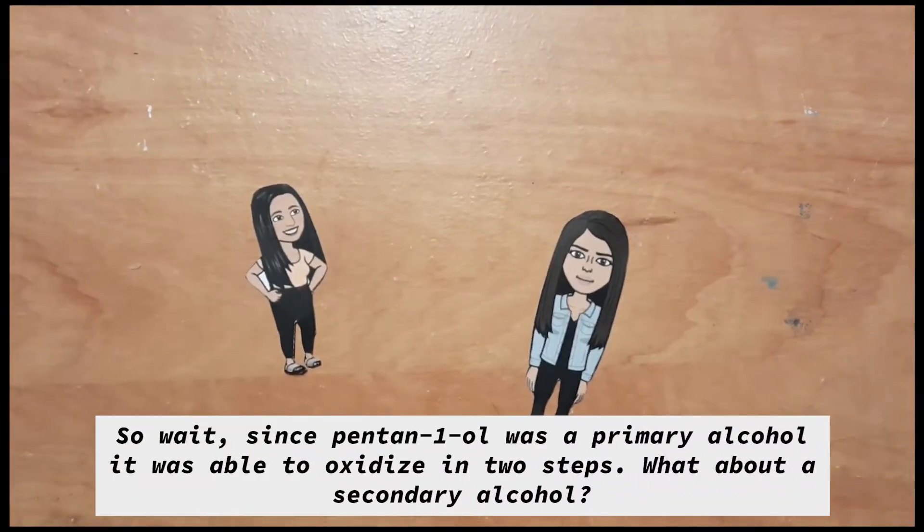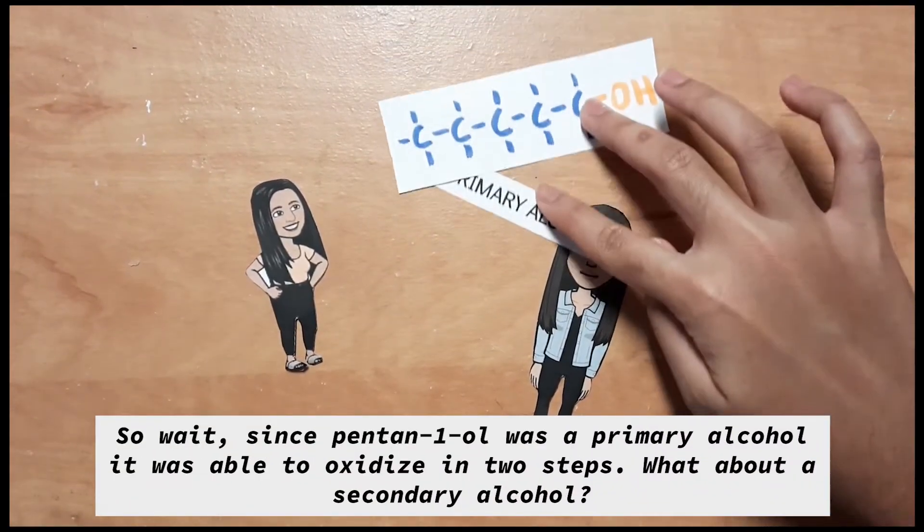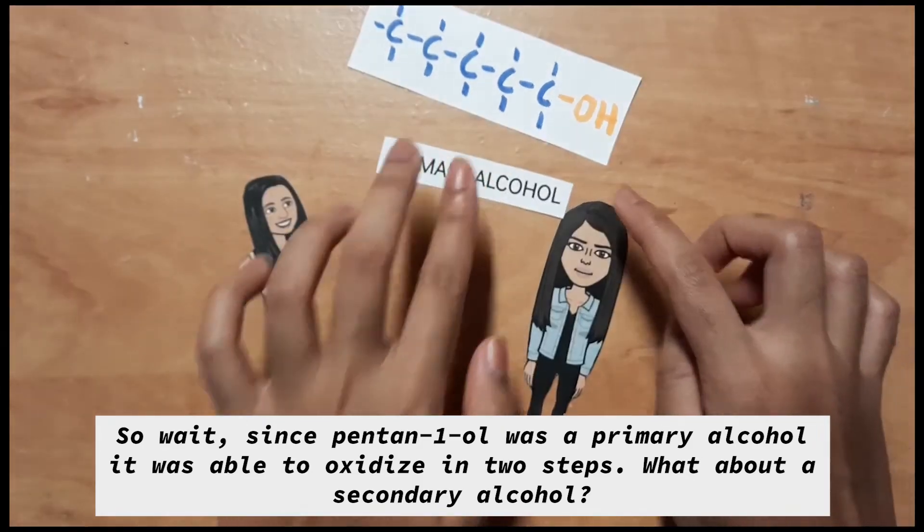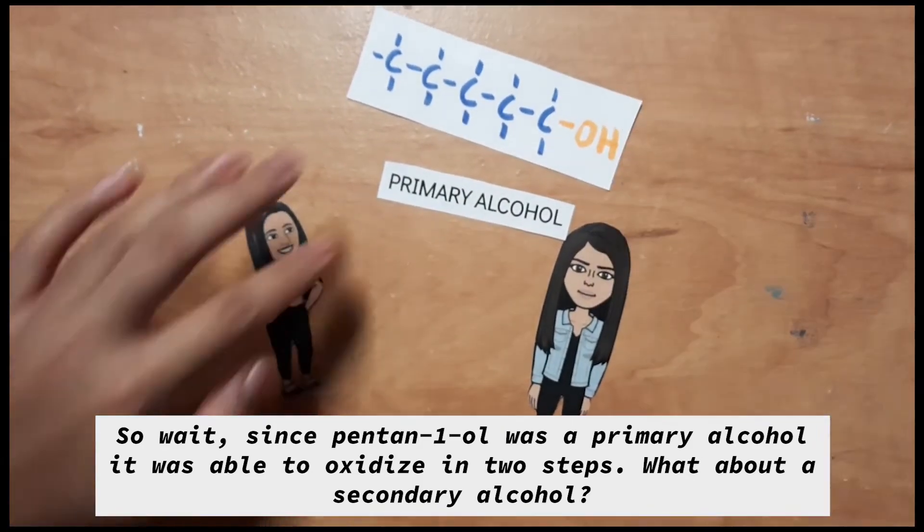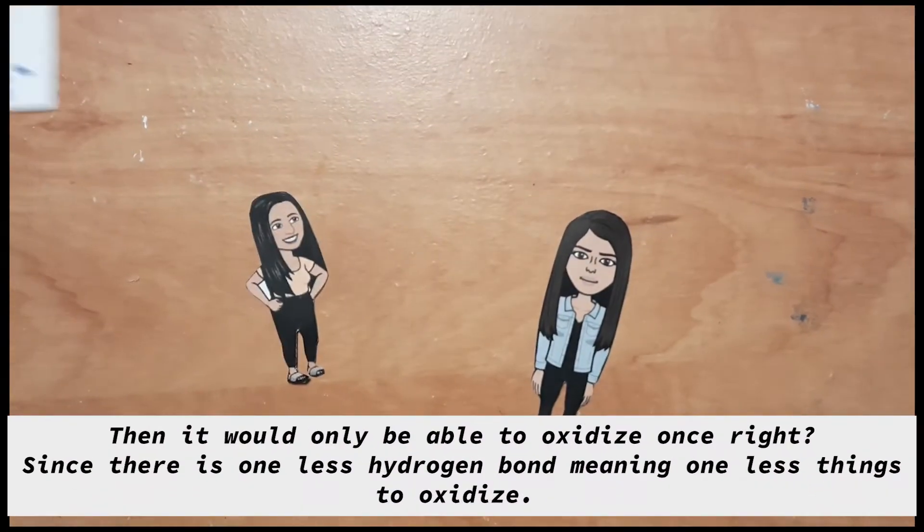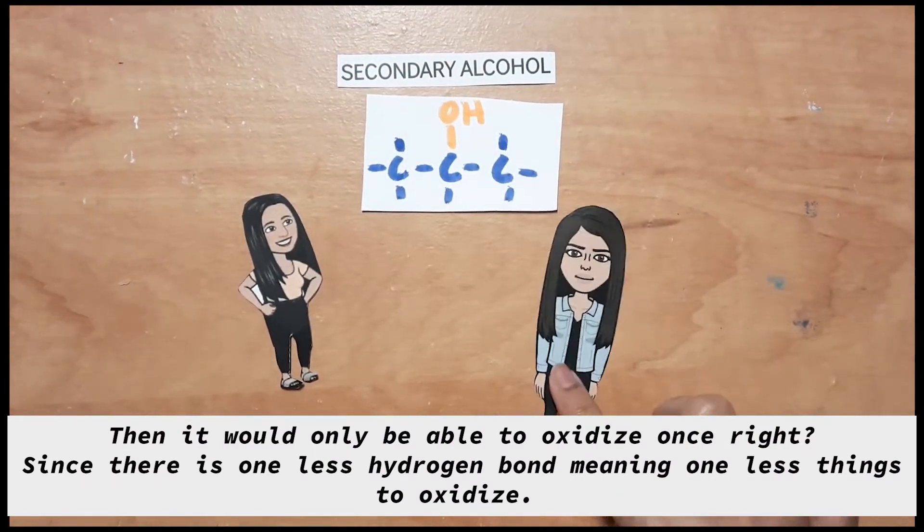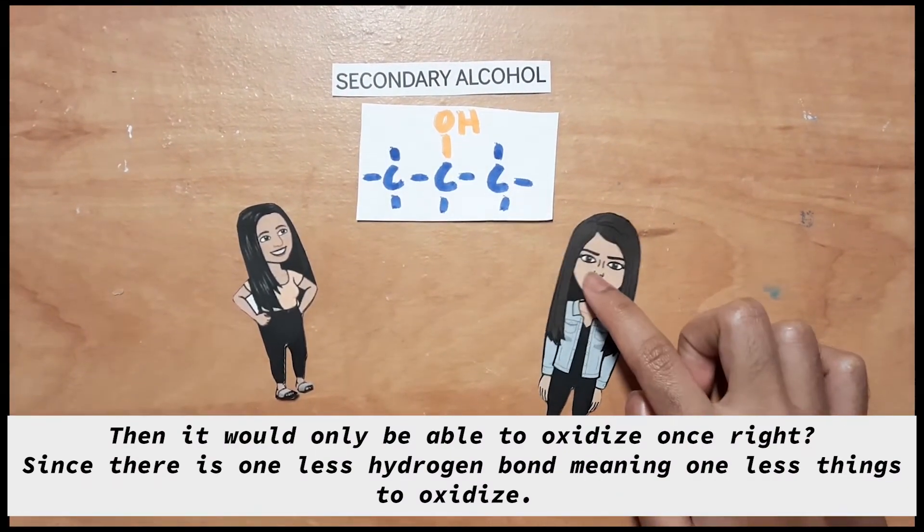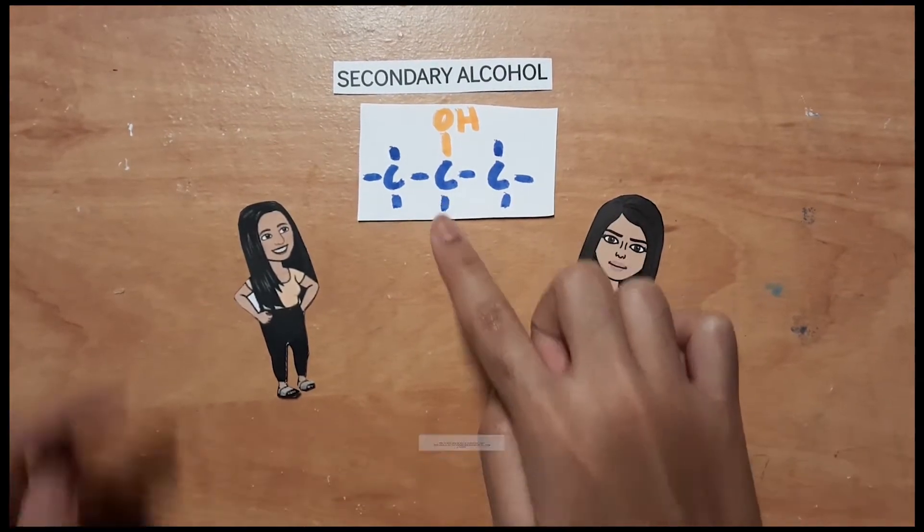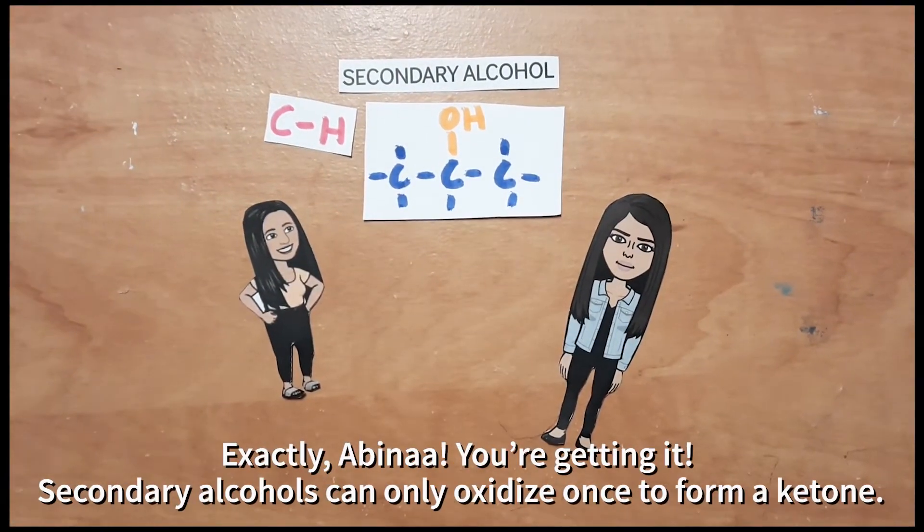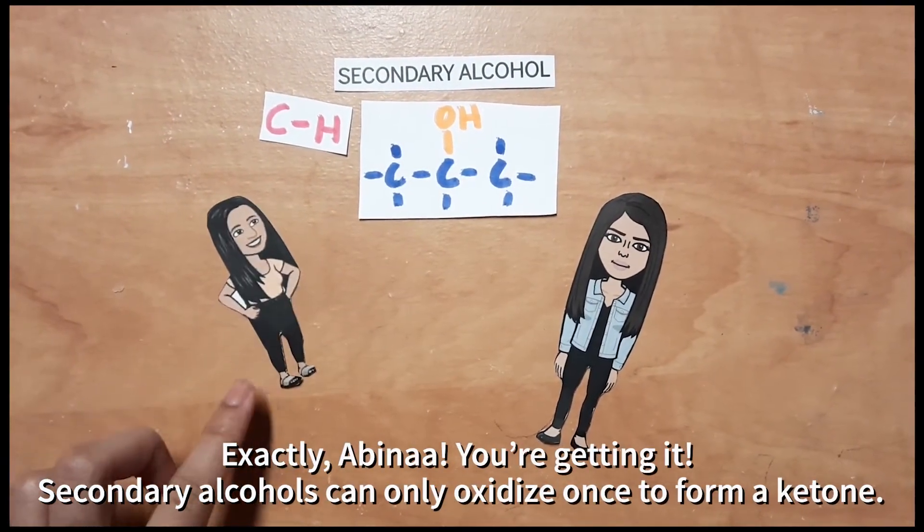So wait. Because pentanal was a primary alcohol, the carbon was able to oxidize in two steps. Let's say it was a secondary alcohol. Then it would only be able to oxidize once, right? Because there's one less hydrogen bond, and one less thing being oxidized. Exactly. A secondary alcohol can only oxidize once to form a ketone.